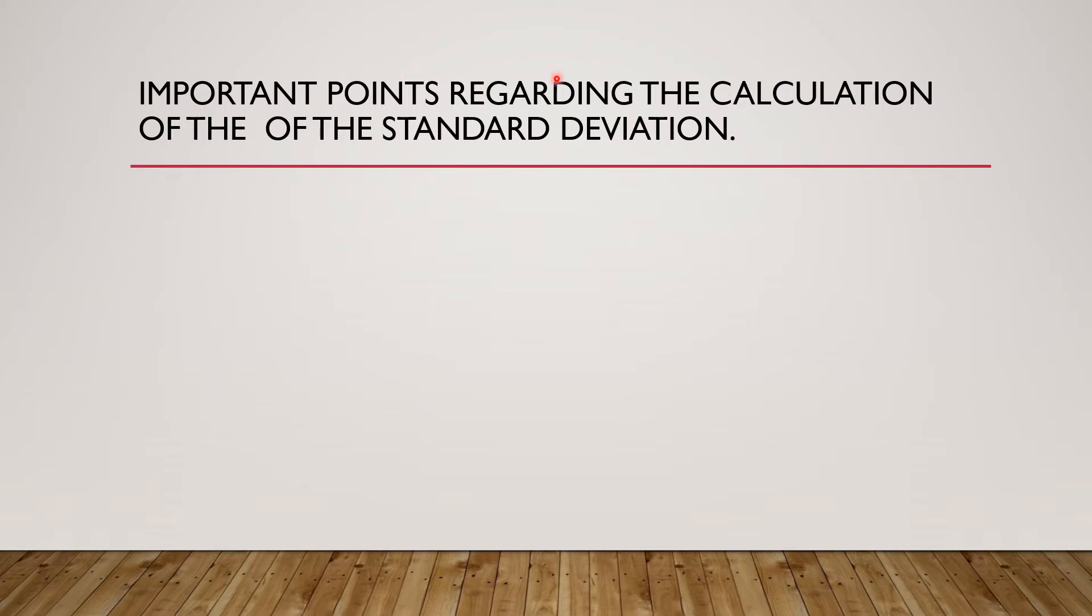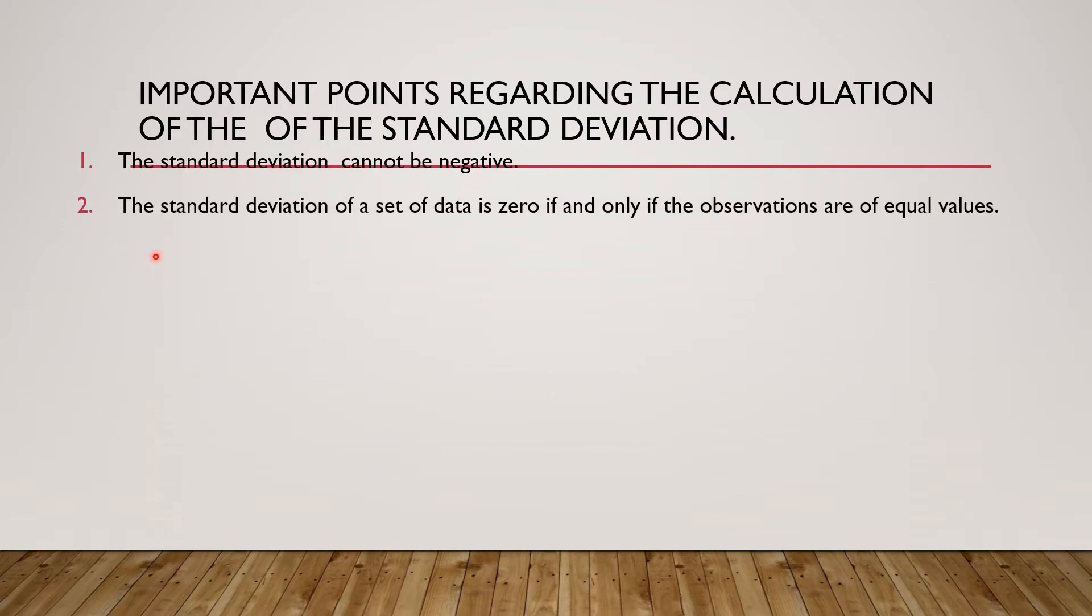Important points regarding the calculation of the standard deviation. 1, the standard deviation cannot be negative. It's impossible to be negative. 2, the standard deviation of a set of data is 0 if and only if the observations are of equal values.